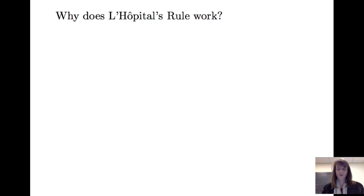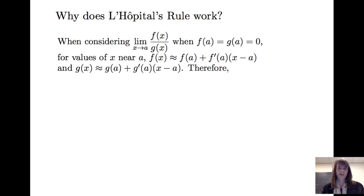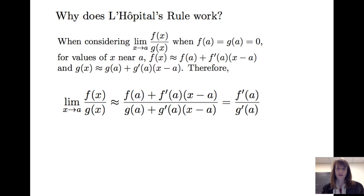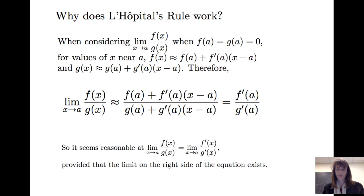Now, why does L'Hôpital's rule work? Well, if we consider the limit of f(x) over g(x) as x approaches a, and we know that f(a) and g(a) equal 0, then when x is near a, using linearization, f(x) is approximately f(a) plus f'(a) times (x minus a), and g(x) is approximately g(a) plus g'(a) times (x minus a). So I can rewrite the limit as approximately [f(a) + f'(a)(x−a)] over [g(a) + g'(a)(x−a)], and we simplify to get f'(a) over g'(a). So it seems reasonable that L'Hôpital's rule works, provided that the limit on the right side of the equation exists.